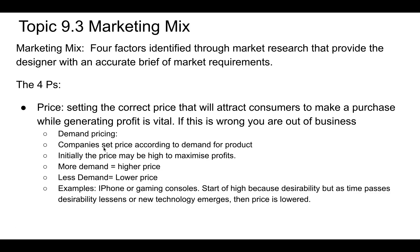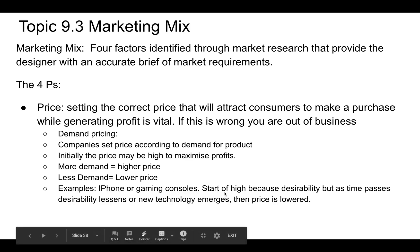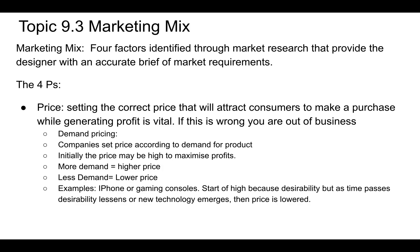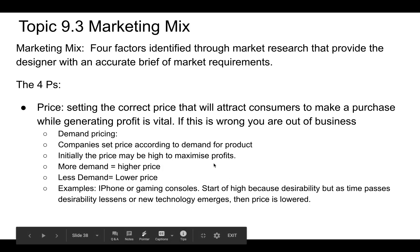Demand pricing is where companies set the price according to the demand for the product — classic supply and demand from economics. If there's huge demand for a product, you'll have a higher price; if there's less demand, a lower price. The initial price may be high to maximize profits. iPhones or gaming consoles start out high because everybody wants the new one, and then as time passes they become cheaper, or something else comes out and you want the newer model instead.